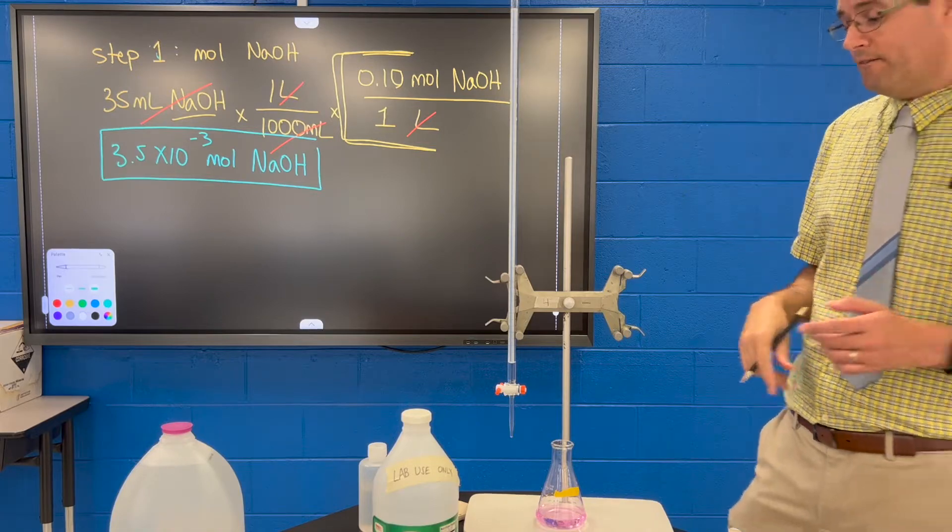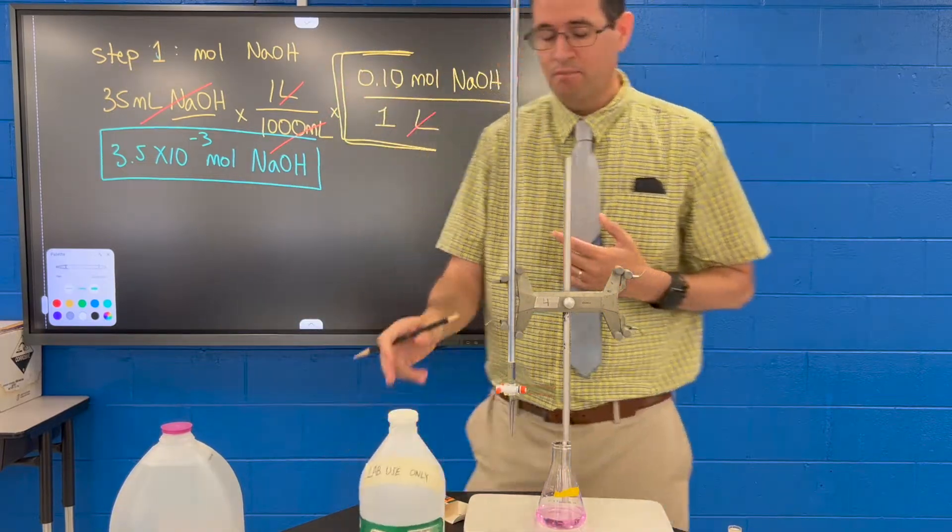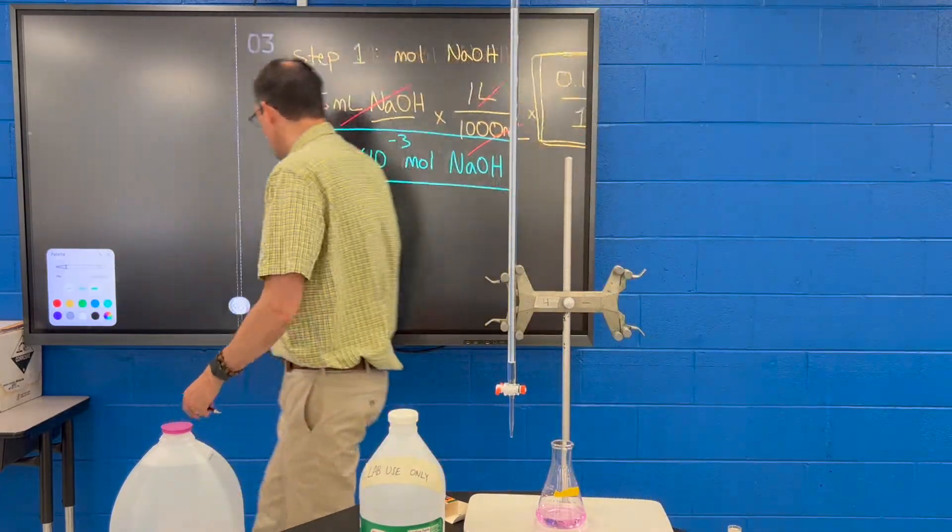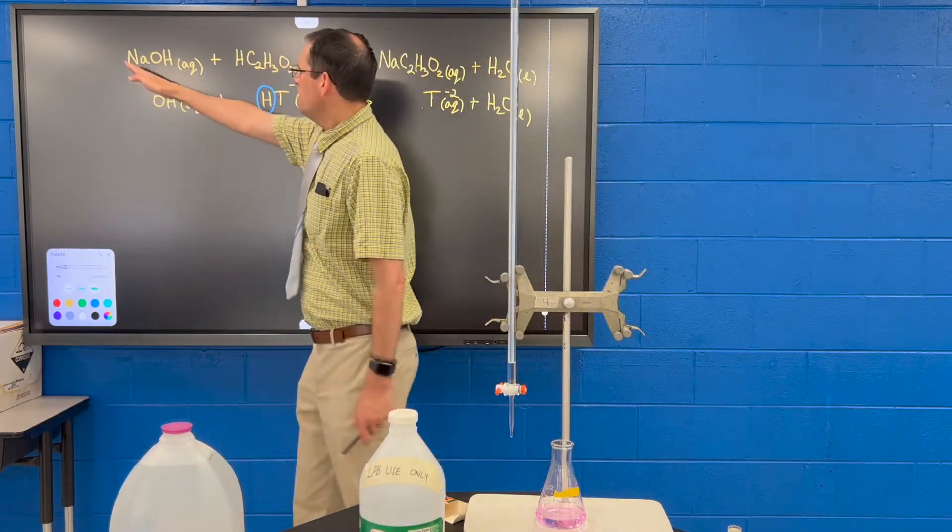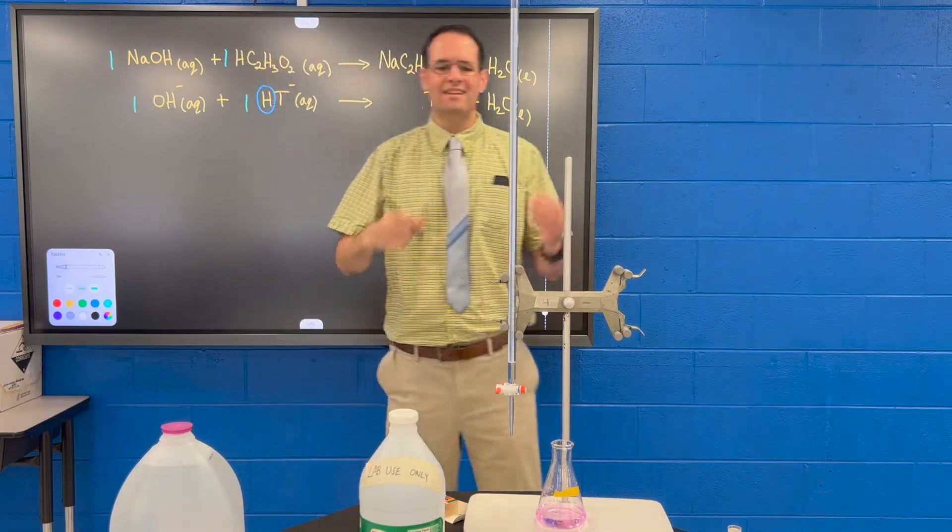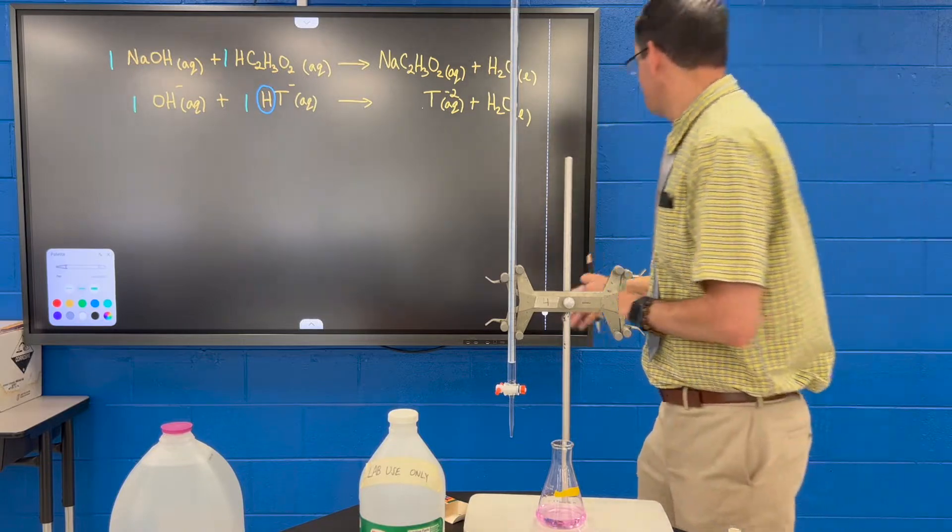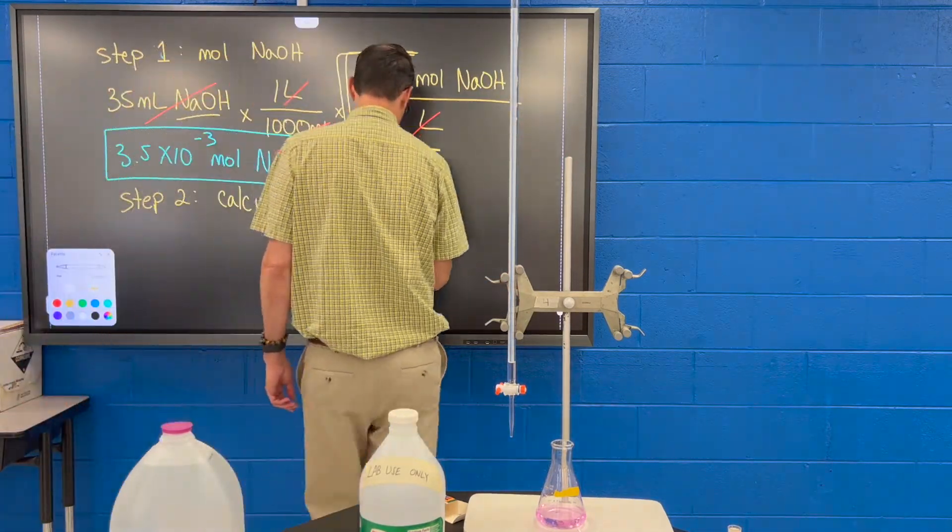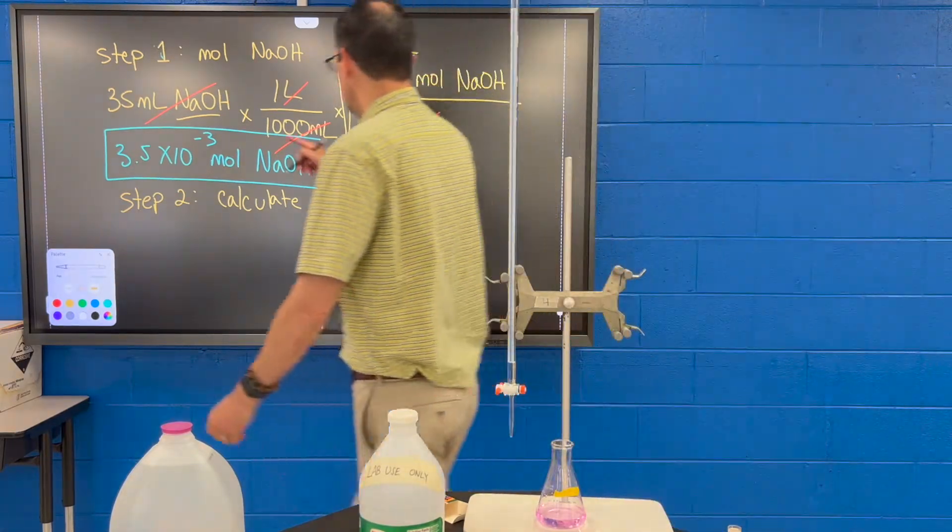Step two, you want to convert moles of sodium hydroxide to moles of the vinegar or the acetic acid. And we do that using the balanced chemical equation. In the balanced chemical equation we saw that there's only one equivalent of sodium hydroxide used per one equivalent of acetic acid. And the same thing will be true in the KSP lab - the KHT and the sodium hydroxide react one to one. So step two is to calculate the moles of your acid. That right there is the acid of my demonstration with the acetic acid. So we take this number here.